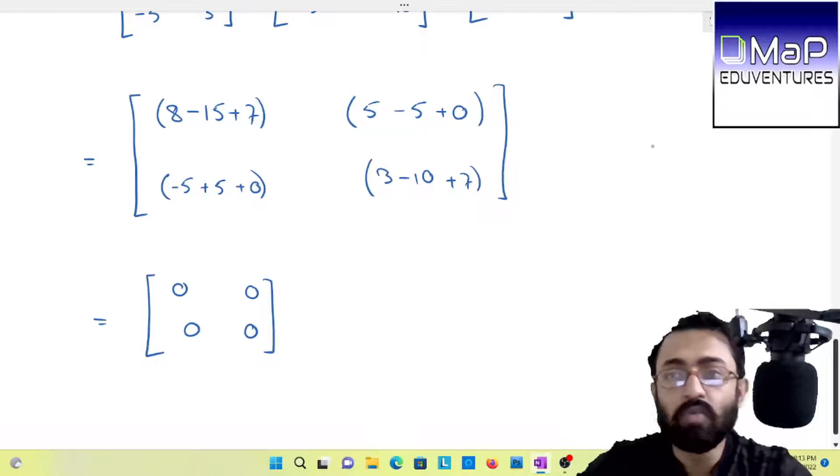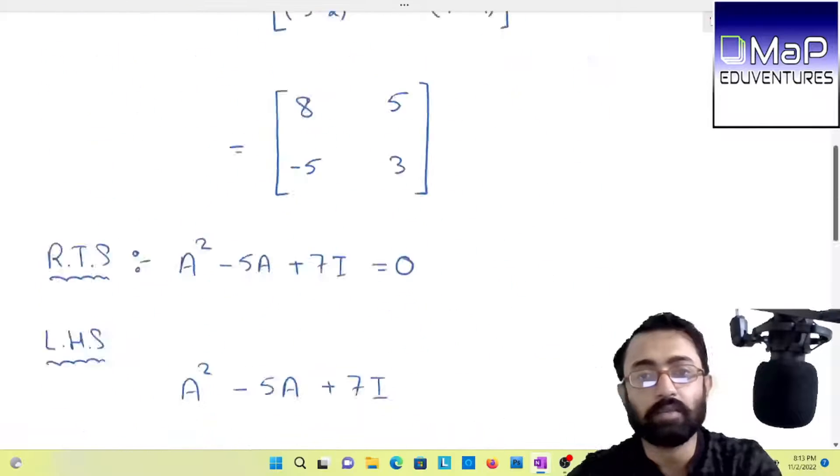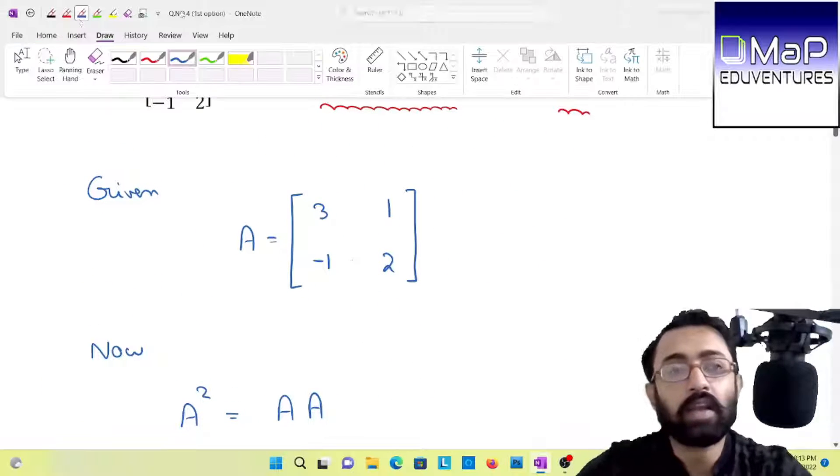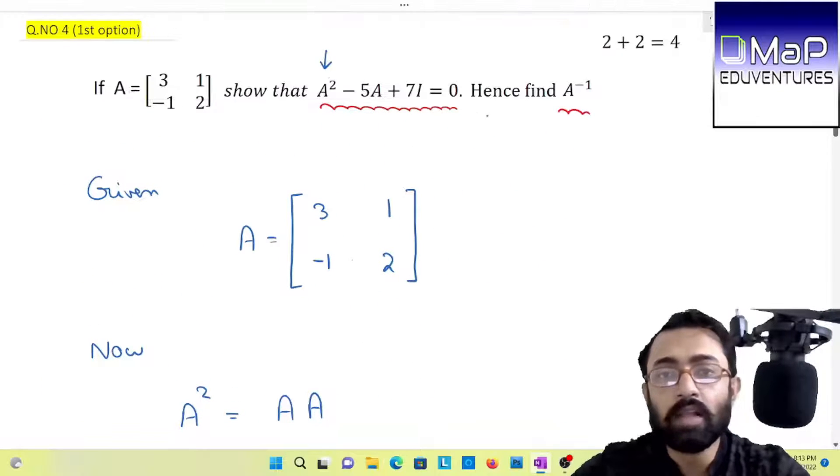Now it will be much more easier to add the three matrices. Taking the corresponding elements: 8 minus 15 plus 7, 5 minus 5 plus 0, minus 5 plus 5 plus 0, and 3 minus 10 plus 7. As we can see here, our result is the zero matrix. So the first part is clear.